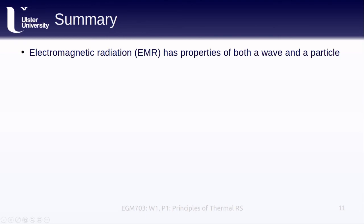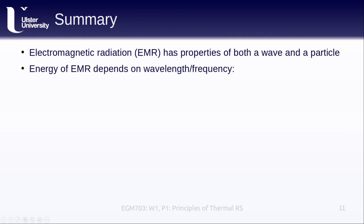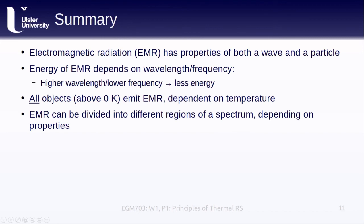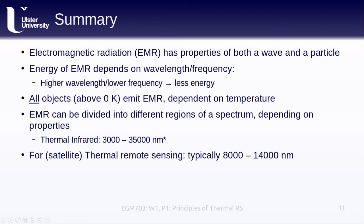To summarize: electromagnetic radiation has the properties of both a wave and a particle. The energy of electromagnetic radiation depends on its wavelength or frequency — higher wavelengths or lower frequencies mean less energy, and vice versa. All objects with a temperature over absolute zero emit electromagnetic radiation, the amount and color of which depends on temperature. The thermal infrared is usually considered to be the region between 3,000 and 35,000 nanometers. When doing thermal remote sensing, especially from satellites, we typically use the region between 8,000 and 14,000 nanometers, because this represents both a strong atmospheric window and the peak of Earth's emitted radiation.